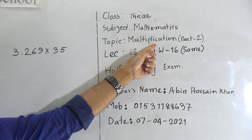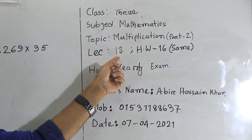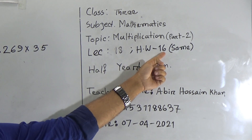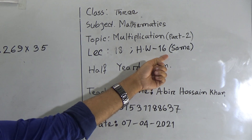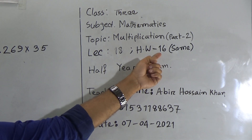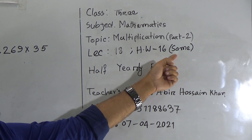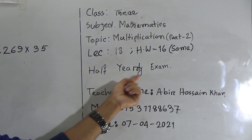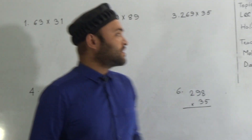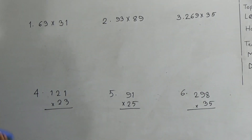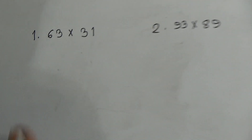Our today's lecture is 18 and homework is 16, and the homework is the same as this class. My students, the homework number is 16 and it is the same as this class, which is included in the half-yearly examination. Now, my dear students, let's start our class. The first question is 63 times 31.